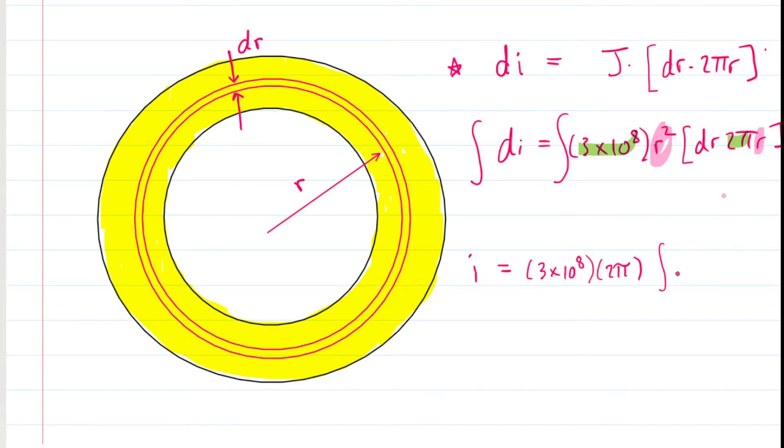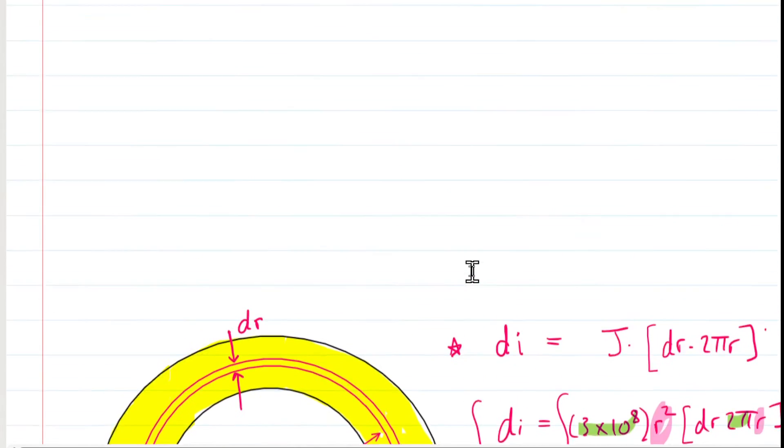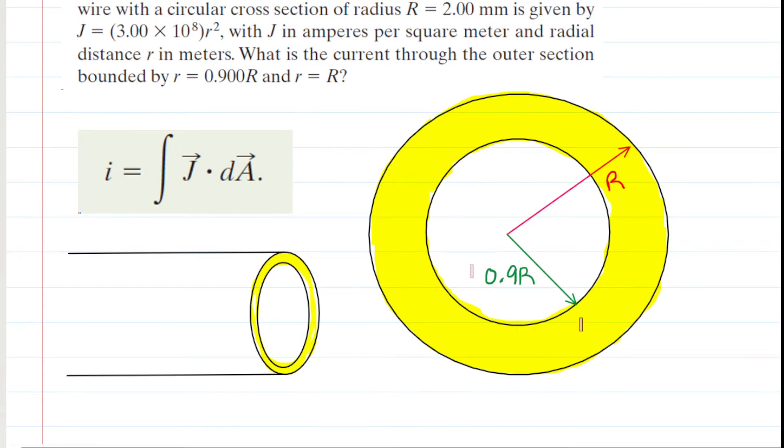And, after factoring those constants out, we still have some variable terms. We have the R squared times the R. That's going to make R cubed. And then we have dR. So, we're getting really close to integrating this expression. But, of course, since our variable is R, then we need some limits of integration of the same variable. So, we need some radii. We need a lower radii and an upper radii. But, those were given in the problem. The lower bound of integration is going to be the 0.9R, and the upper bound of integration is going to be the R.